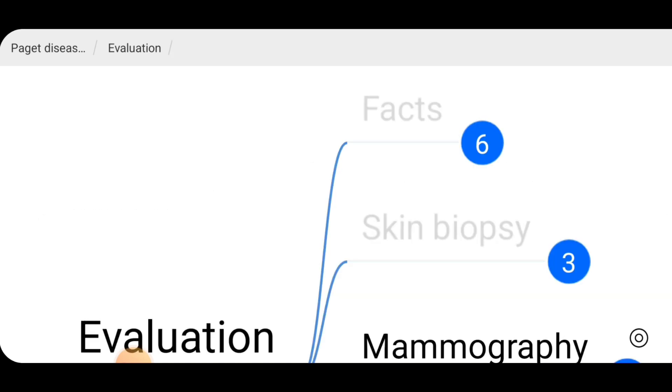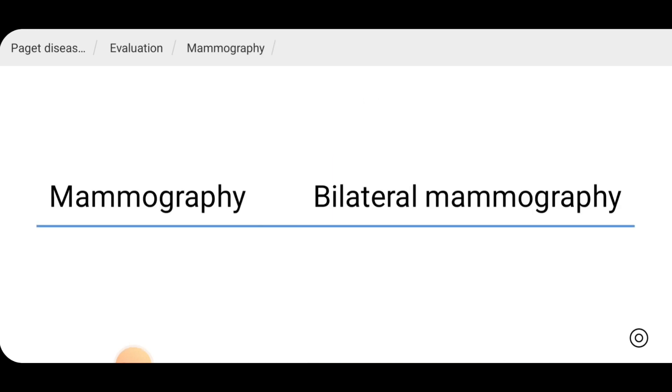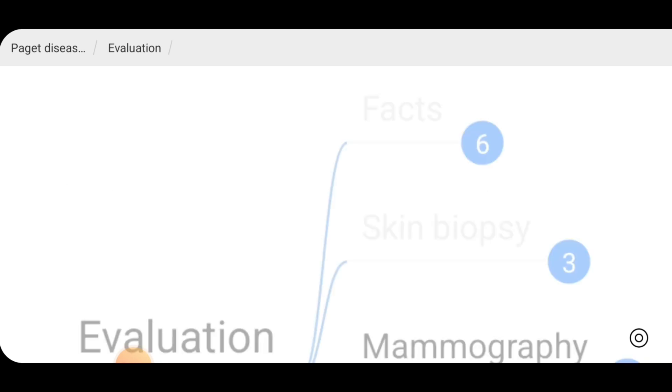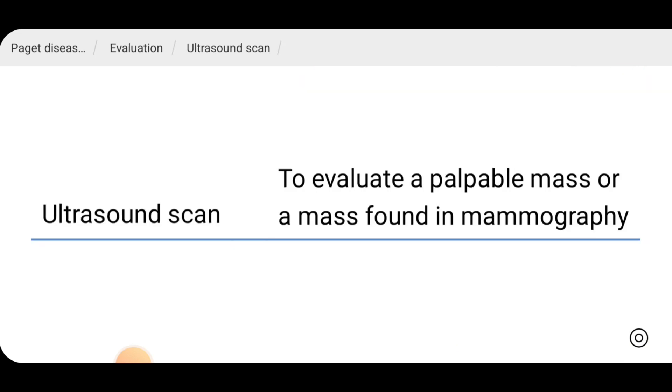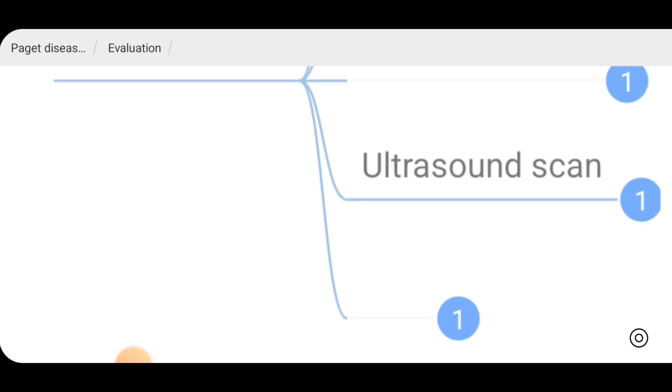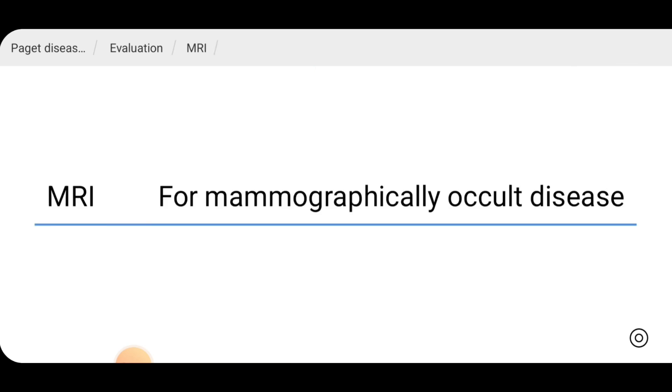And also in the evaluation, we can do a mammogram. Usually, we do bilateral mammogram to find a lesion. And if a lesion is there, we can do an ultrasound scan to evaluate a palpable mass or a mass found in mammography. And there's a place for MRI in patients who are having mammographically occult disease. To exclude a lesion, we can do MRI.